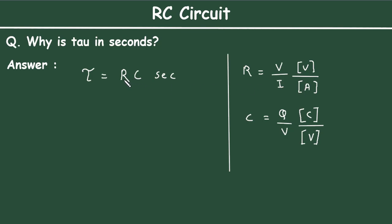If we substitute these units, we will replace resistance by volt per ampere. So it will be [V/A] multiplied by capacitance.